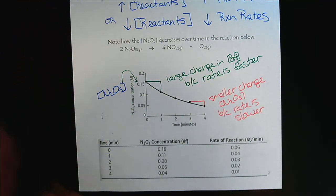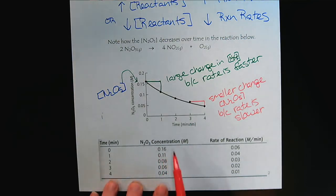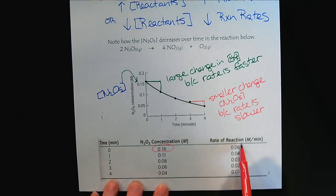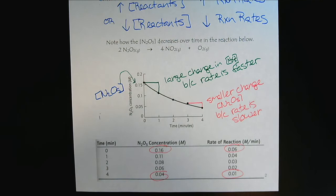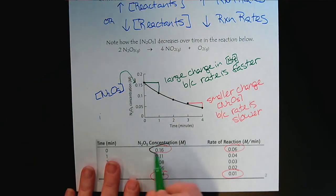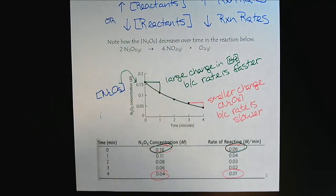For those who prefer information in table form, we can see that at the highest concentration we have the fastest rate, and at the lower concentration we have a much slower rate. That summarizes the effects of concentration on reaction rates.